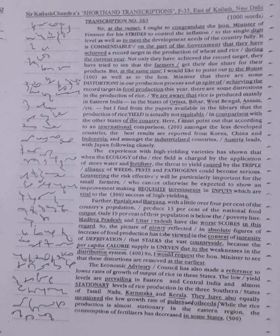We are aware that rice is produced mainly in Eastern India, in the states of Odisha, Bihar, West Bengal, Assam, etc. But I find from the papers available in the library that the production of rice yield is actually not equitable in comparison with the other states of the country.